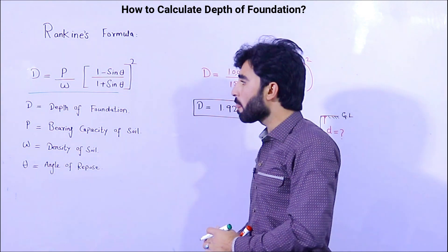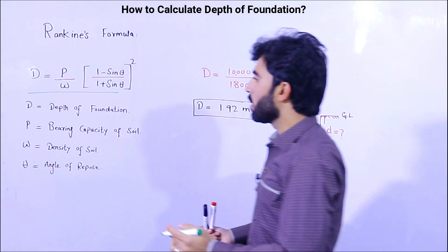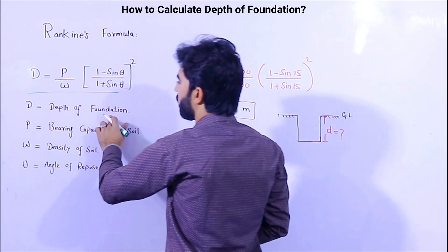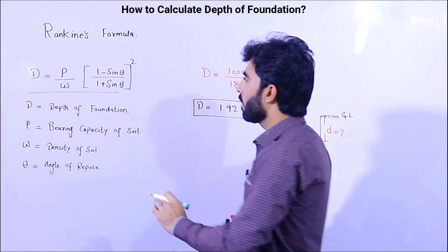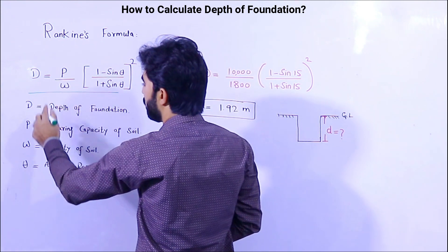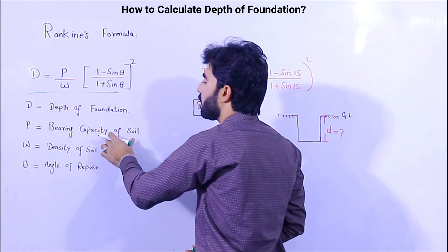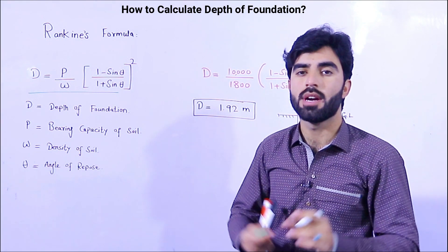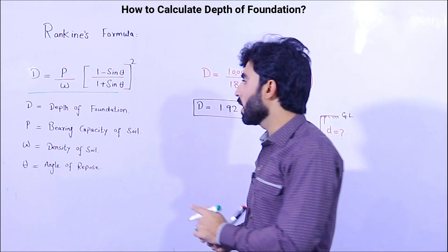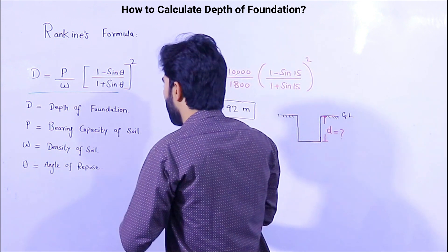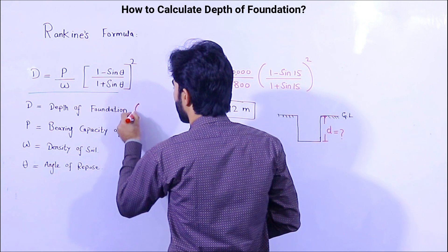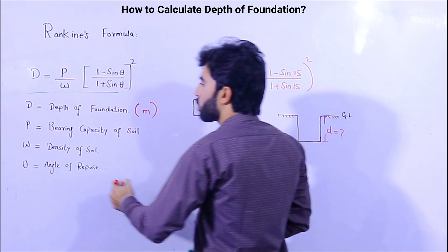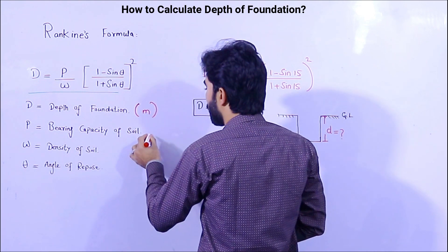Here, D means depth of foundation, and it should be in meters. The next variable is p, which means bearing capacity of soil. As you know, we have different types of soils, and for different types of soil we have different bearing capacities.